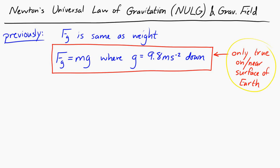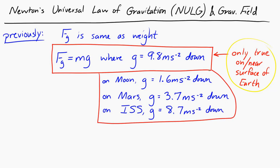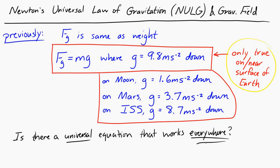We can get a little more mileage out of it by noticing that if we go to the Moon and stay at the surface, it's the same equation — we just set g = 1.6 m/s². If we went to Mars, g = 3.7 m/s² down. At the International Space Station, g = 8.7 m/s² down. So the question comes up: is there a universal equation that would work everywhere, instead of adjusting g each time?